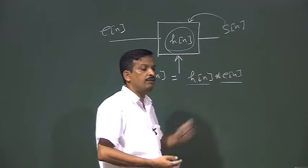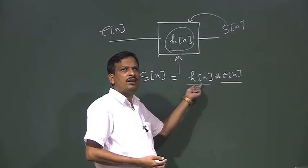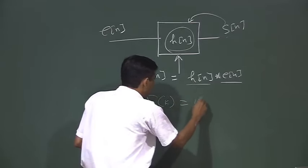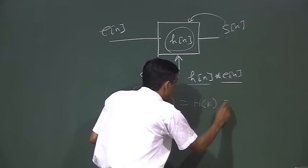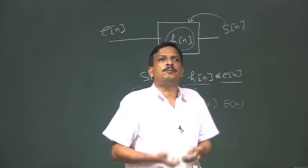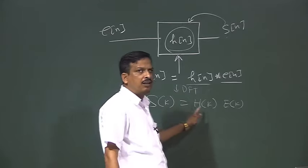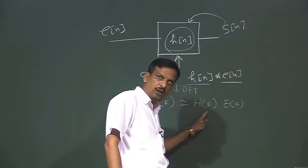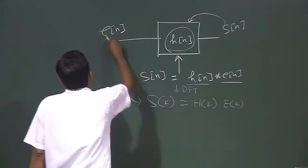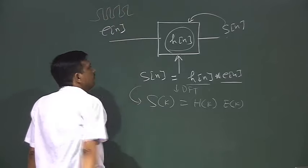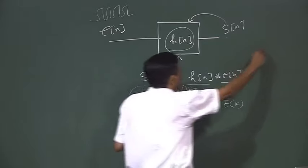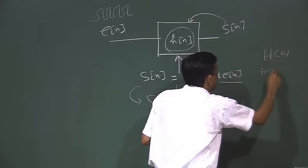I want to eliminate E(n). If it is a convolution in the time domain, and if I take the frequency transform of this signal, so this is S(k), this is H(k), this is nothing but a multiplication by E(k). So if I take the DFT — discrete Fourier transform — or if I represent the speech signal in the frequency domain, this is nothing but a product of the spectral representation of the vocal tract with the spectral representation of the excitation source.